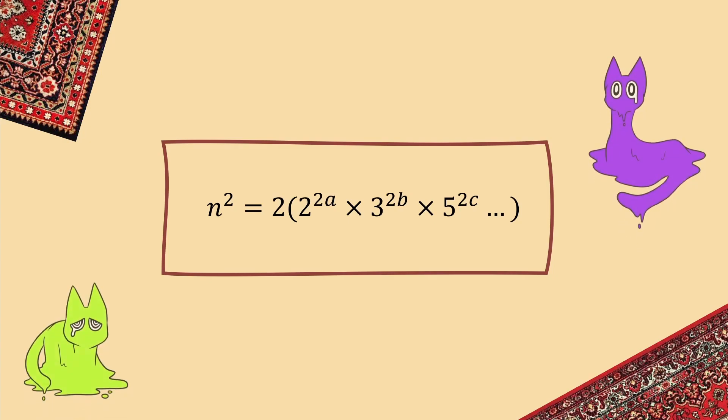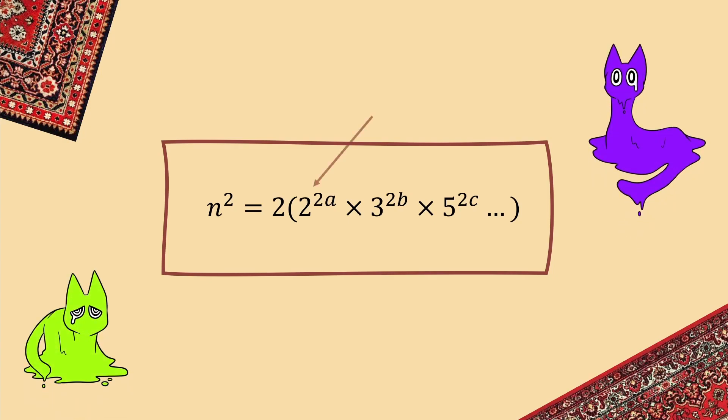Now some eagle-eyed exponent experts might already notice the contradiction here, specifically, that if we bring the two in from outside the parentheses, we now have a factor of two, which is to an odd power, 2A plus 1. Effectively what this means is that the number on the right cannot possibly be a square number,